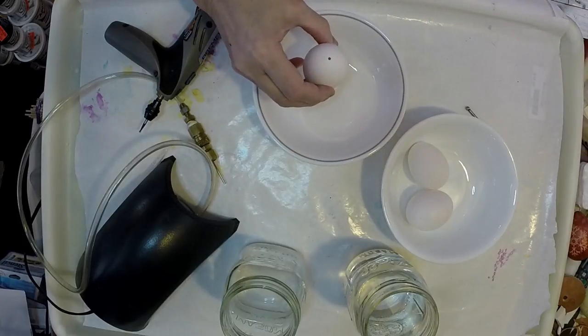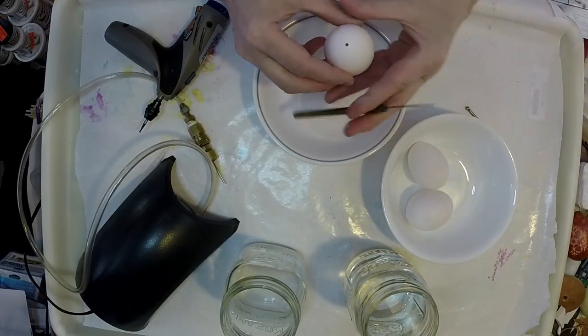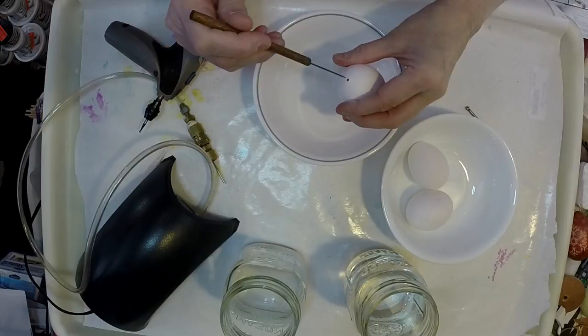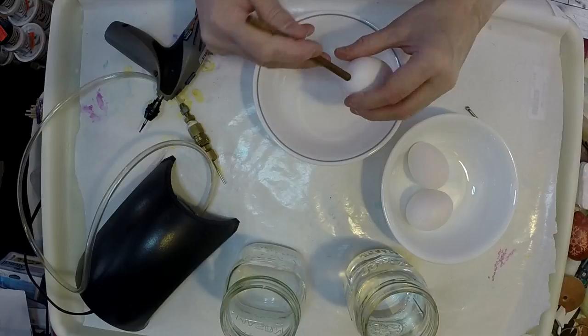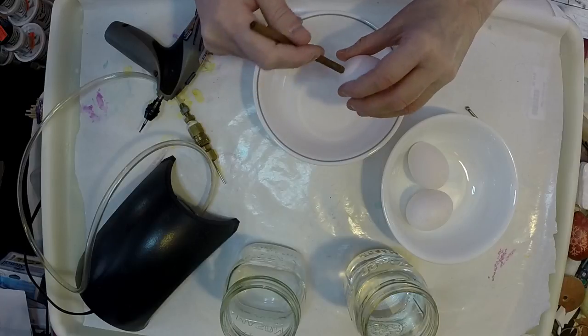Then I'm going to take something—I call it a pokey—that I can stick inside so I can scramble it inside the egg. This helps especially with the yolk coming out of the hole.